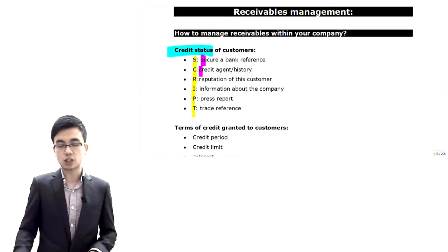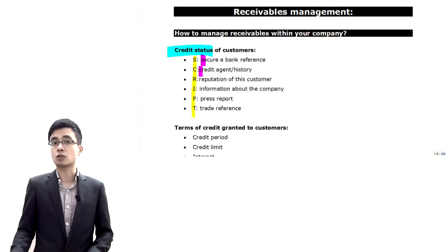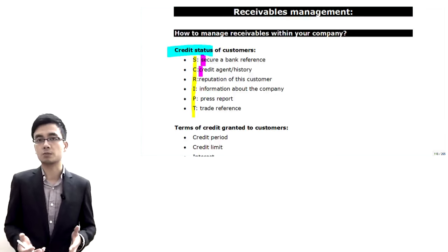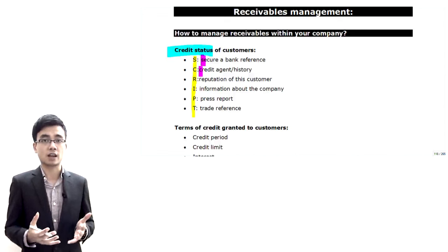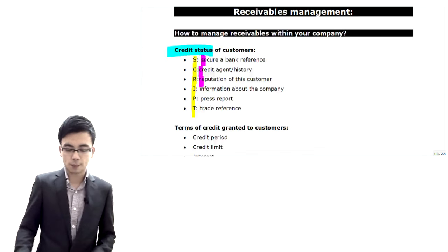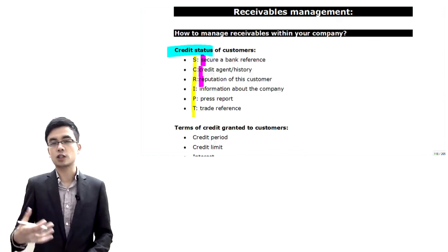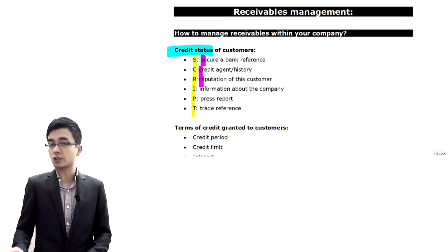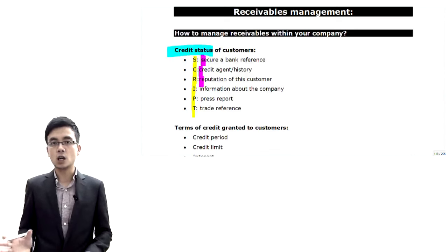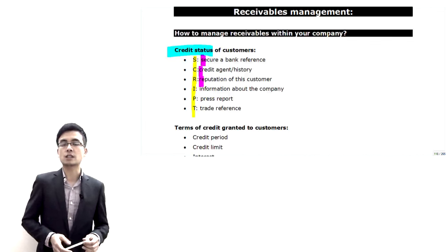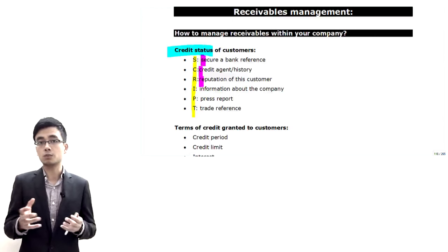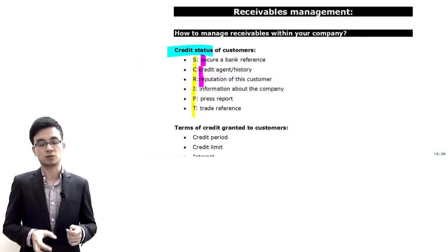Secondly, for large companies especially, we look at credit agencies such as Standard & Poor's or Moody's. We can review their reports to assess risk and whether they have defaulted on payments. We can also review the customer's reputation — asking staff if they've seen anything in newspapers or magazines about defaulting or illegal activities.